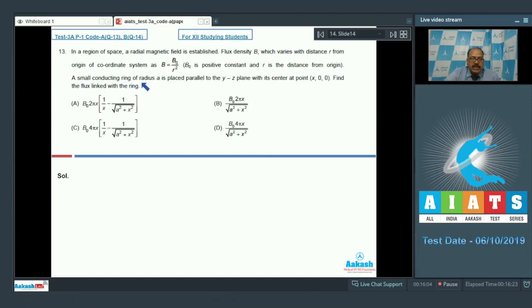A small conducting ring of radius A is placed parallel to the YZ plane with its center at point X, comma 0, comma 0. Find the flux linked with the ring. This is simply about finding the magnetic flux through the ring. The situation has been described. Just to make it clear, I just draw a diagram.